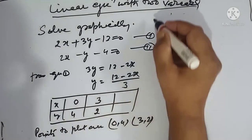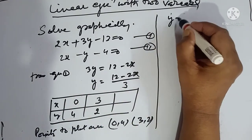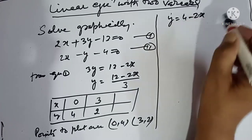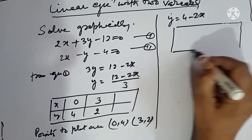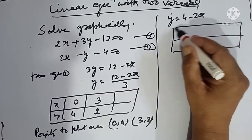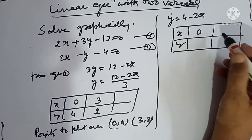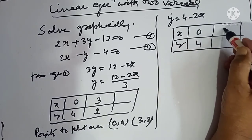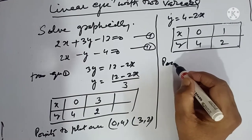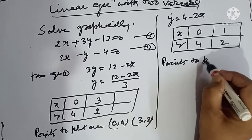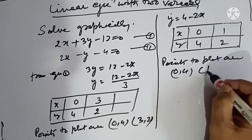Similarly, from equation 2, y equals 4 minus 2x. Putting x equal 0, we get y equals 4. Putting x equal 1, we get y equals 2. The points to plot from equation 2 are (0, 4) and (1, 2).